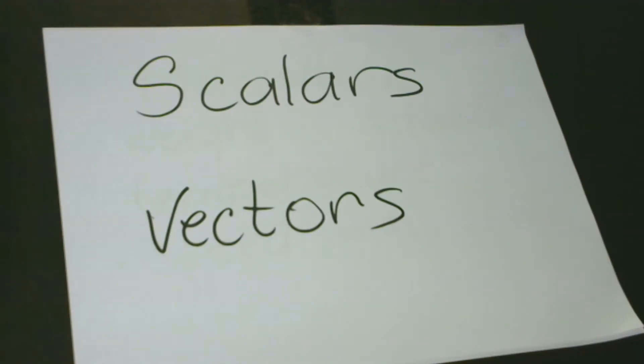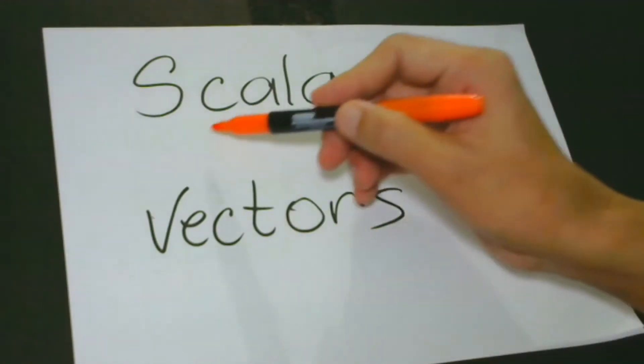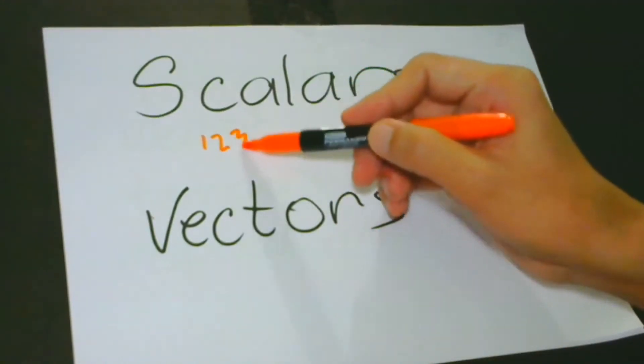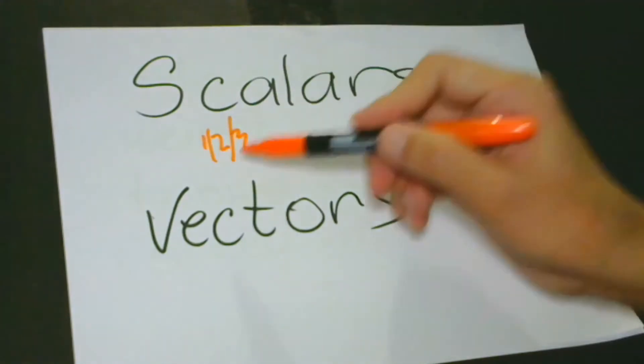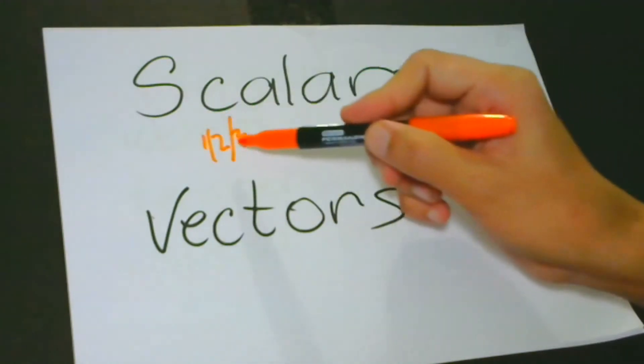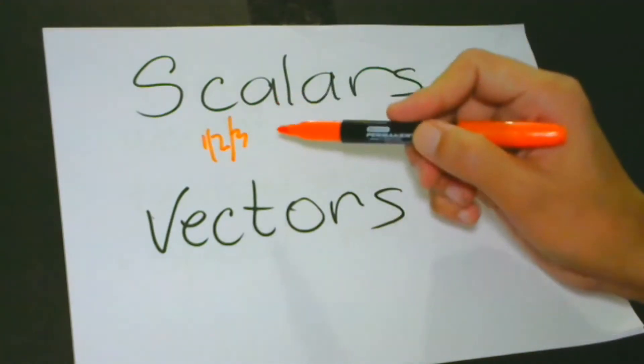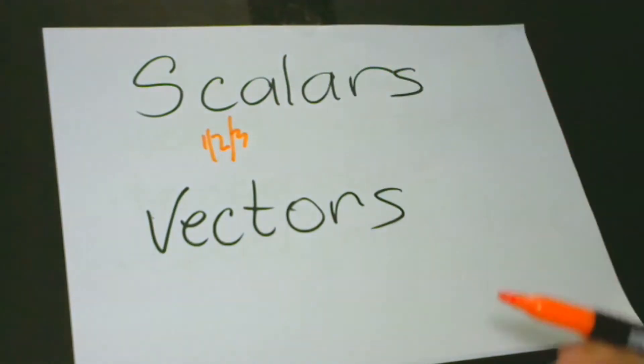When we say scalar, it is just a single number. Just like for example, when you say 1, 2, or 3. The single number 1, single number 2, and single number 3, these are what we call scalars.